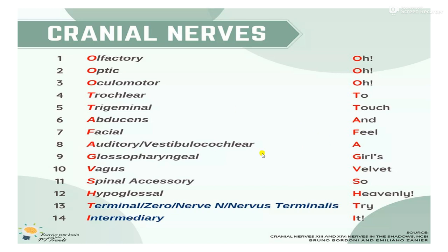Auditory or Vestibulocochlear nerve means A — 'A Girl's.' Glossopharyngeal nerve starts with G — that is 'Gulls' or 'Girl's.' Another one is V for Vagus nerve — 'Velvet.' Then S for Spinal Accessory nerve — 'So.' And H for Hypoglossal nerve — 'Evenly.'